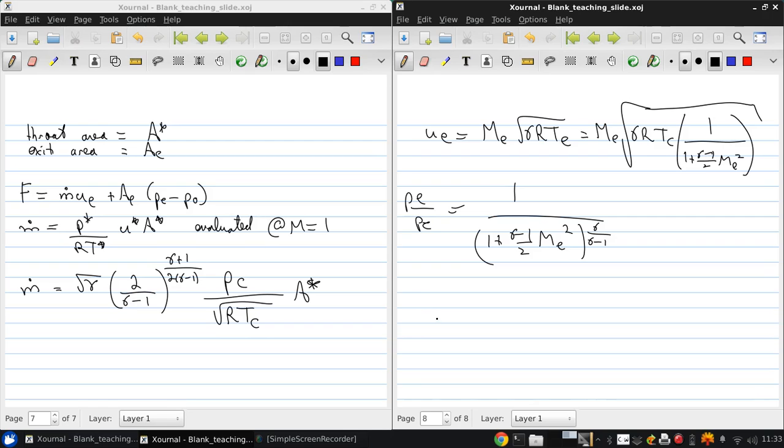So now, by specifying our throat area and the exit area, we can determine the Mach number at exit. And then having the Mach number at exit, along with the combustion chamber temperature, allows us to get UE.